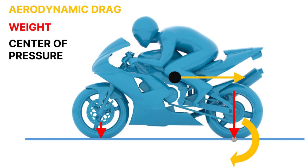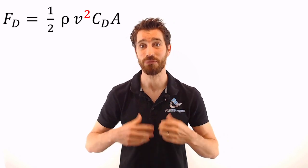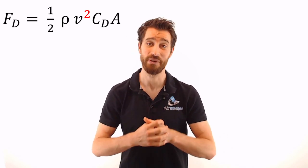Second of all, the center of pressure, which is the point where the total sum of aerodynamic forces are acting, is quite high above the ground for a motorbike. This causes the motorbike to flip backwards compared to the contact point of the rear wheel on the ground, which reduces the normal forces on the front wheel. With lower normal forces and lower contact pressure, driver control and steering control is reduced. And as the aerodynamic force scales with the square of the velocity, this can really become problematic at higher speeds.